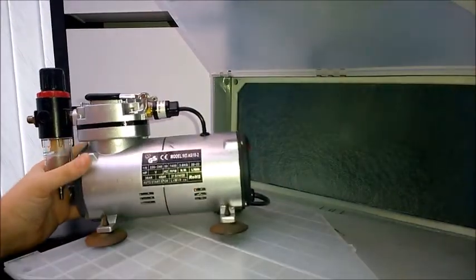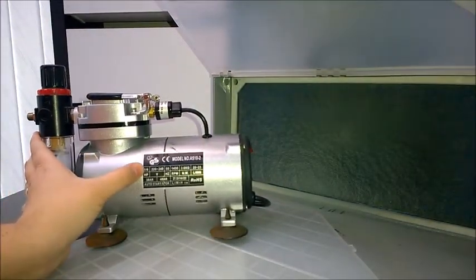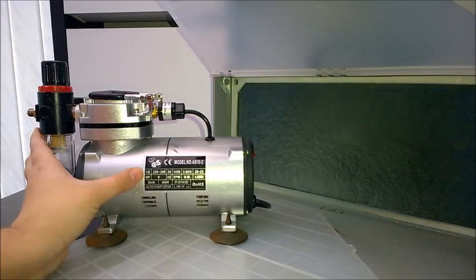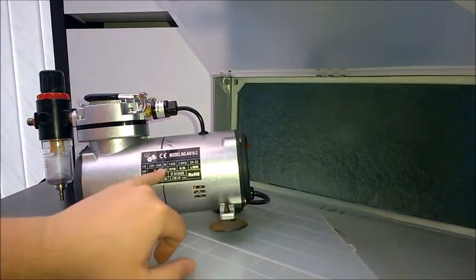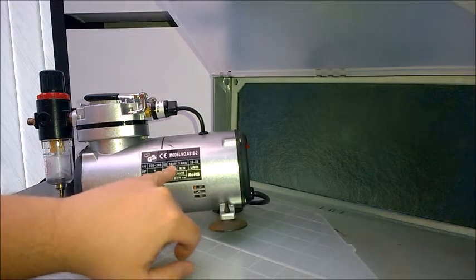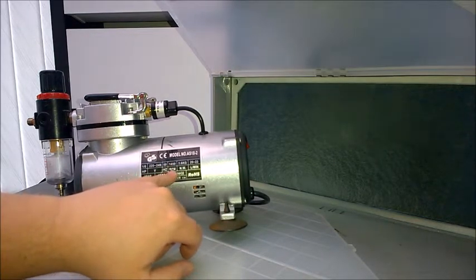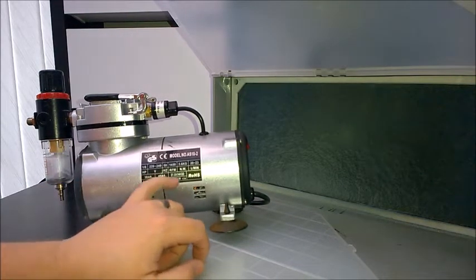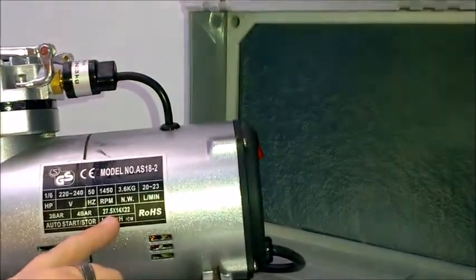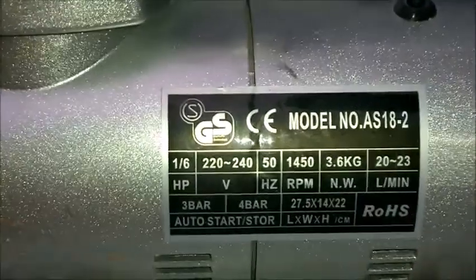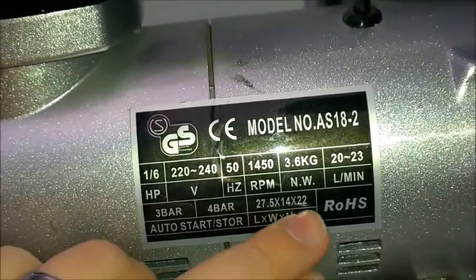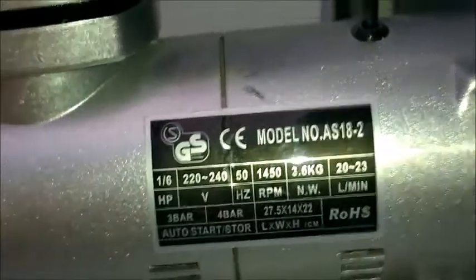Here's the ratings on the side here. I believe that to be, I don't know what HP means. I'm assuming it's horsepower. Don't know, I'd be very surprised if it is. 220 to 240 volt, 50 hertz, 1450 revolutions per minute, 3.6 kilograms. That's your dimensions here. I'm just going to zoom in, guys, and you can actually just have a look at this at your leisure. So that's what we're talking. 3 bar to 4 bar. That's your length, width, and height in centimeter. Auto start, auto stop, as I've just demonstrated.